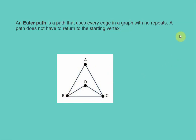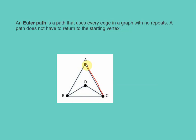An Euler path has to cover every one of the edges and it can't go back over an edge it has already covered. So let's start at vertex B. I can go from B to A to C to B to D and to C. We can go back to the same vertex — we just can't retrace one of the edges we've already gone over. That's not the only Euler path; we could start at C and go to A, B, C, D, and back to B.